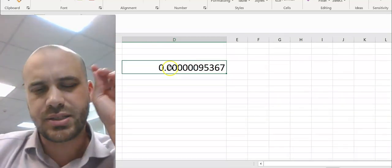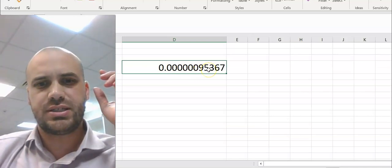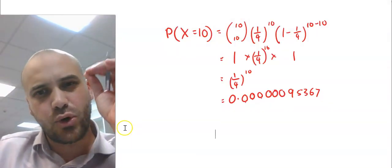How small? I get 6 zeros after the decimal place, 95367. So, that's clearly a very small probability.